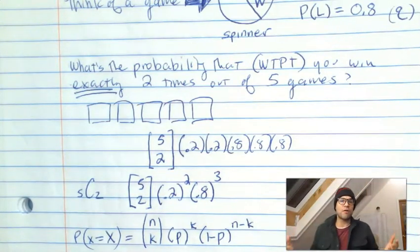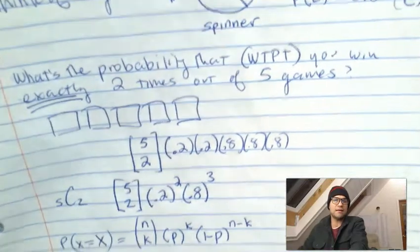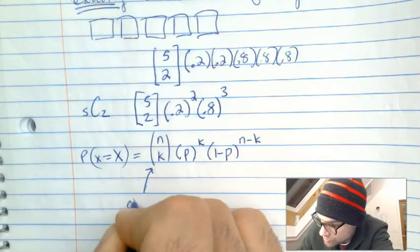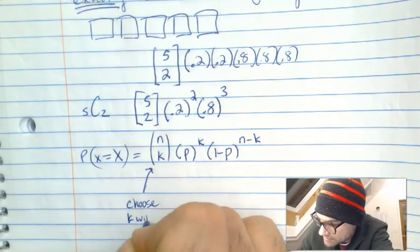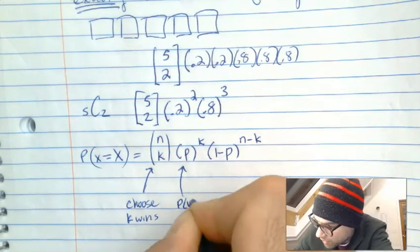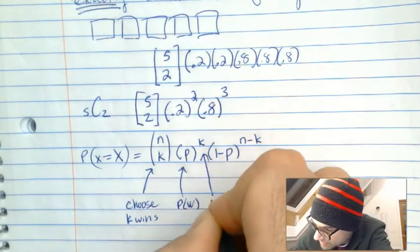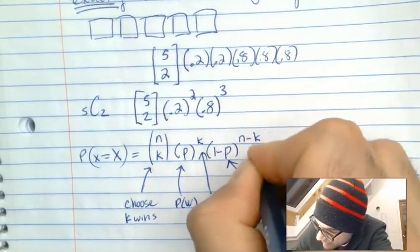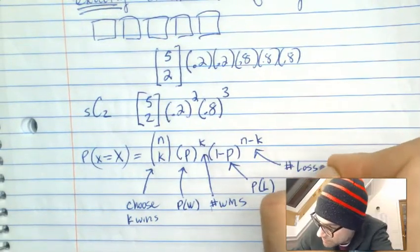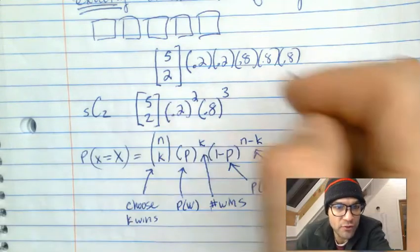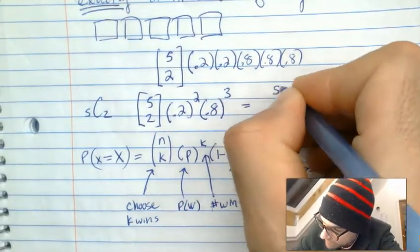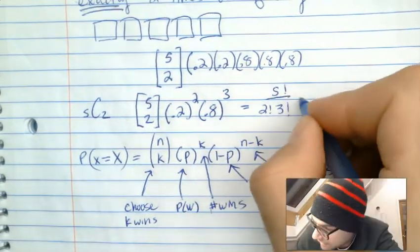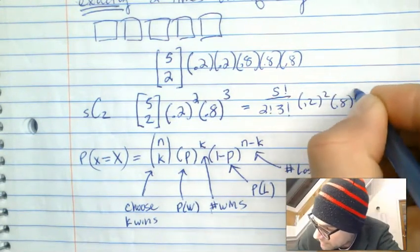Let's break down what those numbers mean. You choose your K wins, this is the probability you won, this is the number of wins, this is the probability of losing, and this is the number of losses. To do this out: five factorial over two factorial times three factorial, times 0.2 squared times 0.8 to the third.